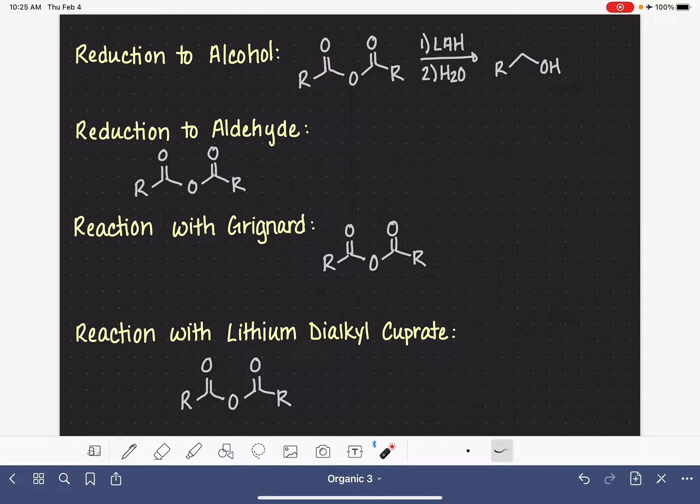For a reduction to an aldehyde, this is where we use our very bulky version of lithium aluminum hydride, lithium aluminum tri-tributoxy hydride, with step two, either water or H3O+, and this gives us an aldehyde.